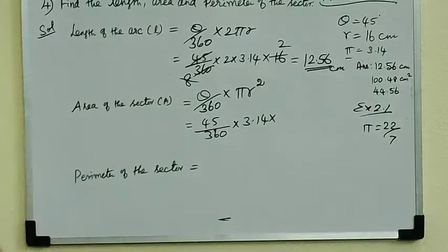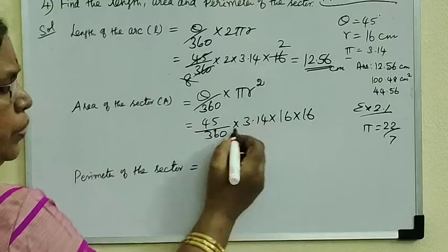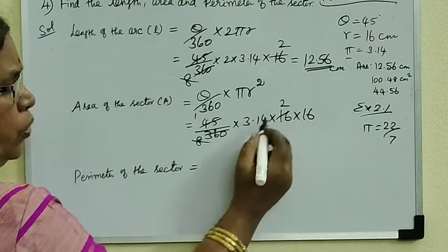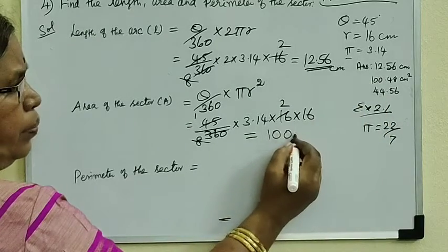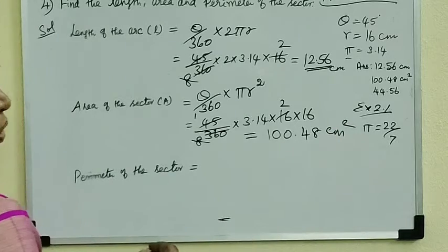So that you are writing 3.14, into R value 2 times. So this is the answer for this: 100.48 centimeter squared.